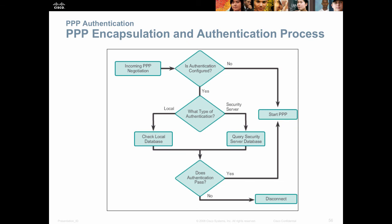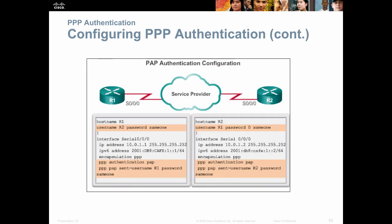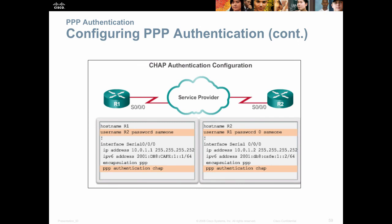Here's the PPP encapsulation authentication process as a flowchart. PPP could also read passwords from a Microsoft Active Directory or some database on your network, instead of locally configured username and password for each link — you could use centrally managed credentials on a server. Here's the authentication command — it has a lot of options, so definitely practice this in the lab and get it in your notes. This is PAP authentication setup, and this is CHAP authentication — notice they are almost identical.